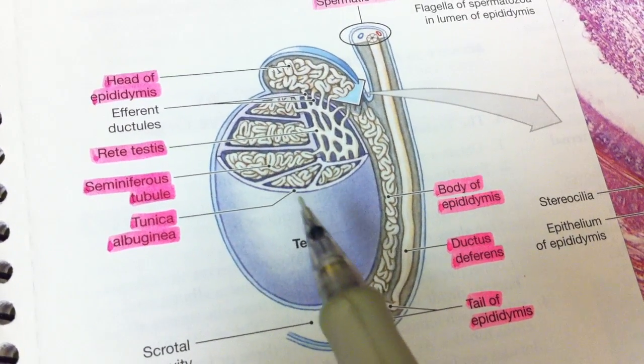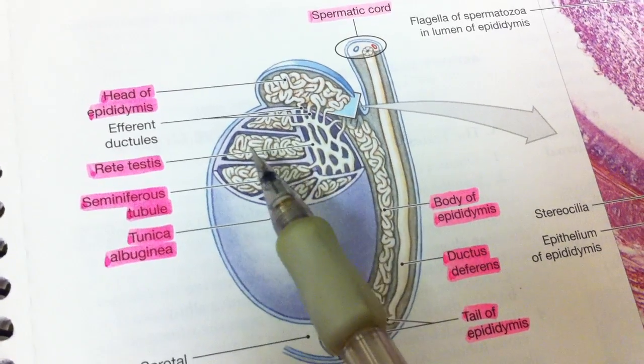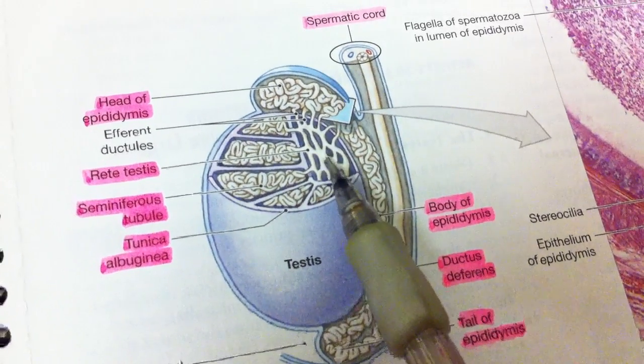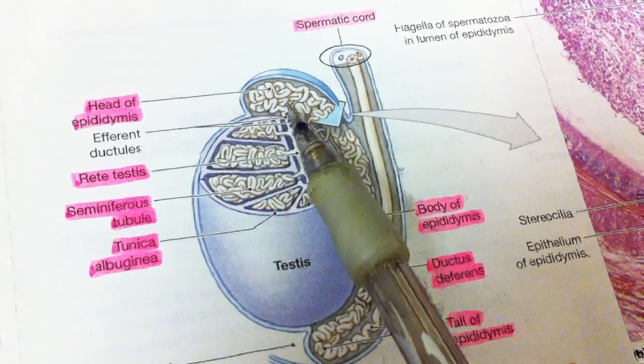After the tubules form the sperm, they enter the rete testis, which is this area right here, and then the rete testis enters the epididymis.